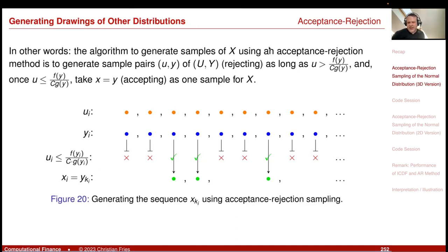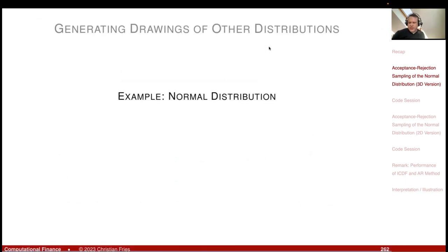What I'd like to do today is illustrate this method with a nice example: I want to sample a sequence that is normally distributed — drawings of the normal distribution. After this example, we will look at acceptance-rejection in the context of Monte Carlo and see that when we combine the two, we find the weighted Monte Carlo method.